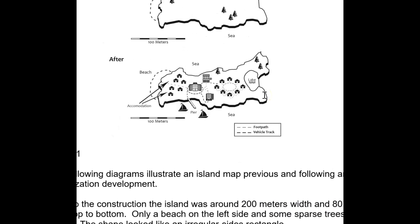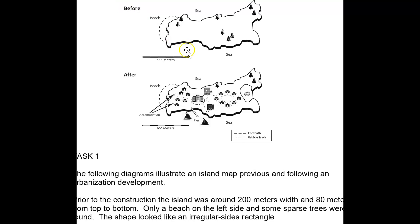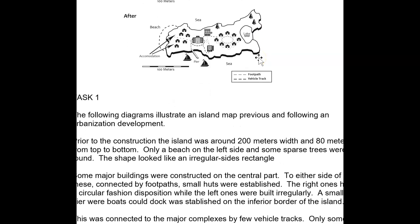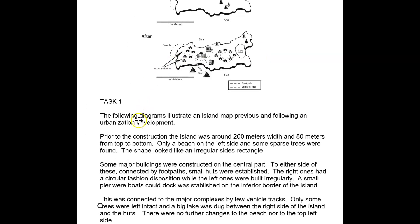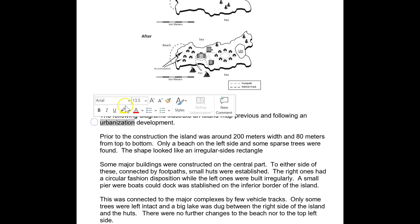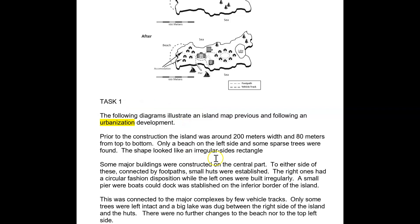Really, really important thing. Look how tiny this is — 100 metres. So it's 250 metres long. It's absolutely tiny. So I'm going to challenge you on this word 'urbanisation.' Urbanisation is a town — there's no town going on. So I think the guess we're going to go with is tourism. The diagram doesn't tell you that, but I think that's an intelligent guess. The following diagrams illustrate an island map previous and following tourism development.